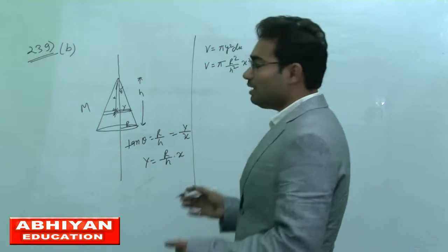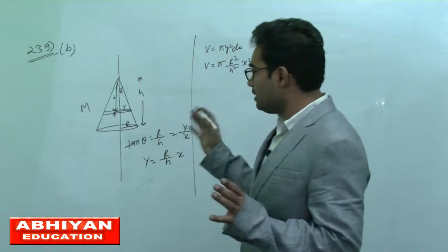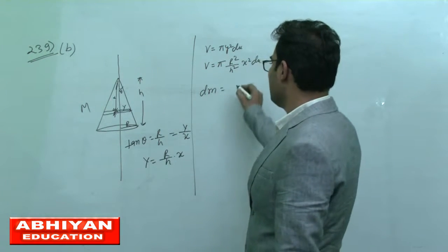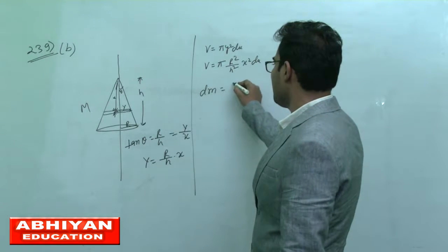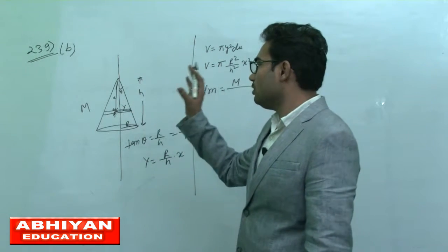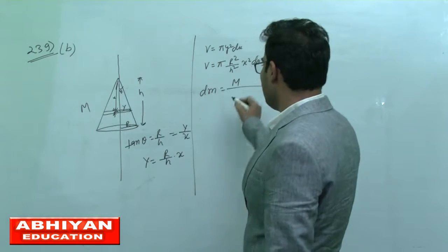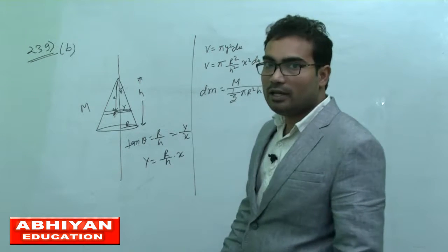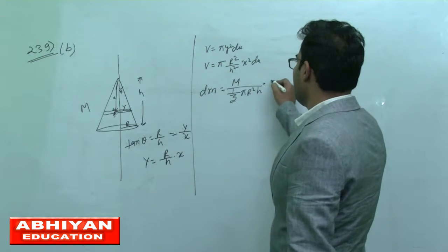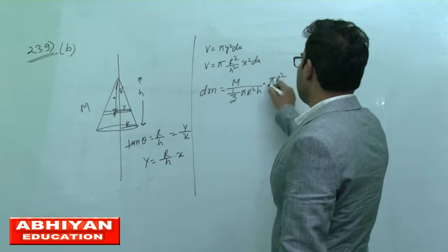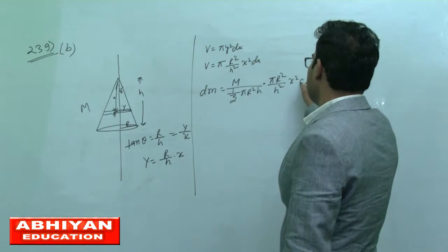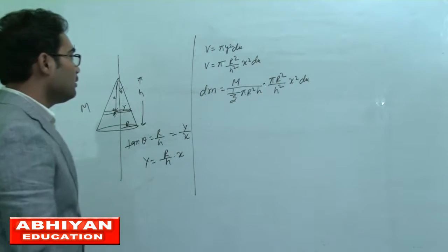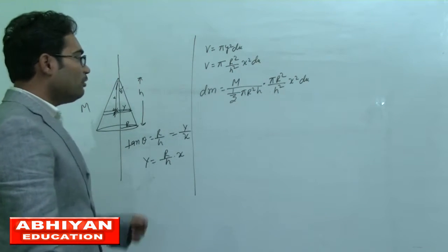The mass distributed in this volume, or dm, is capital M (mass of the cone) divided by total volume (1 by 3 pi R square h), times the volume pi R square by H square times x square dx. This is the value of dm.